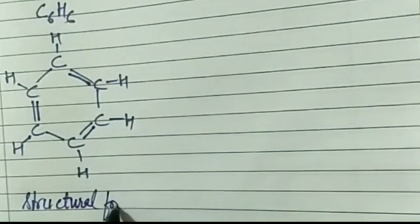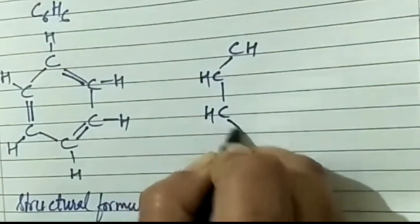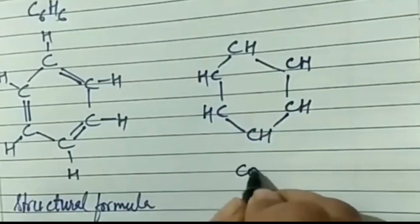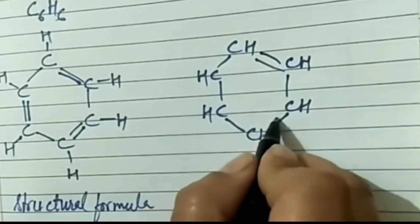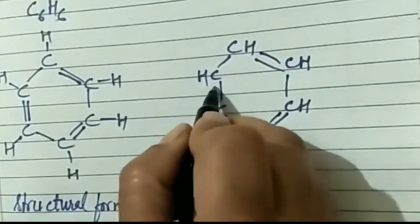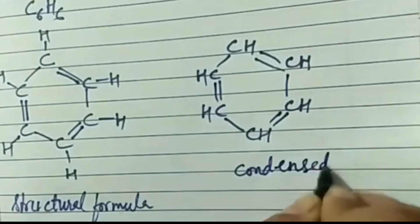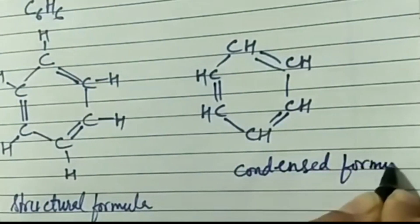Benzene has three single and three double bonds alternating. Now let us write the condensed formula. To write the condensed formula, we omit the bonds between carbon and hydrogen and just show the bonds between carbon-carbon atoms. The alternate single and double bonds satisfy the tetravalency of carbon in benzene.